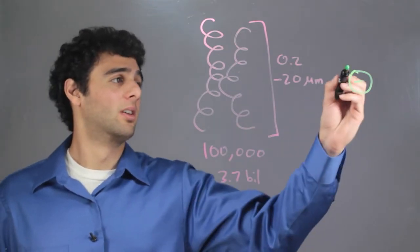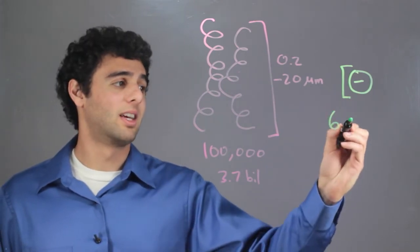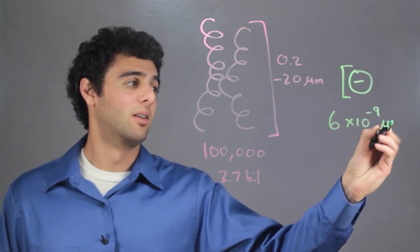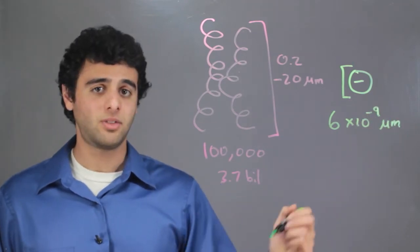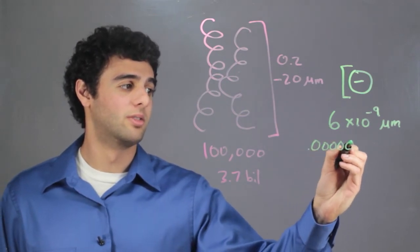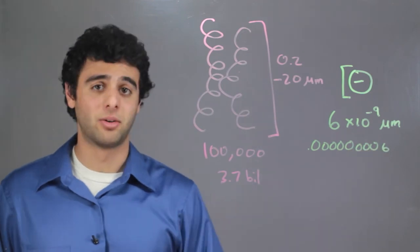How small? The diameter of an electron is about 6 times 10 to the negative 9 micrometers. So that would be .000000006 micrometers.